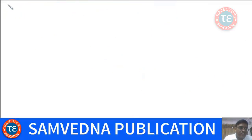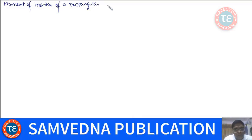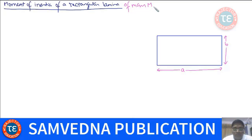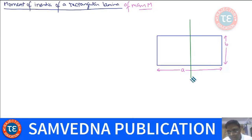Now let's find the moment of inertia of a rectangular lamina — better called a rectangular plate. This is a rectangular plate with sides a and b, having mass M with mass uniformly distributed. We want to find the moment of inertia about an axis parallel to one edge and passing through the midpoint.